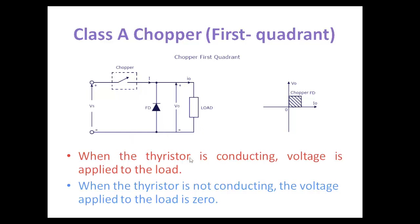When the thyristor is conducting — that means the chopper is closed — the source voltage is applied across the load. When the thyristor is not conducting, with the freewheeling diode, the voltage applied across the load is zero. These are the two modes of operation: when the switch is on, the voltage source is applied across the load; when the switch is off, with the freewheeling diode, the voltage applied is zero.